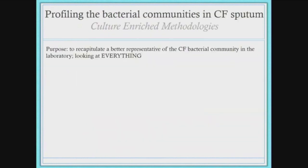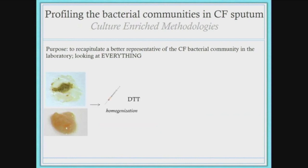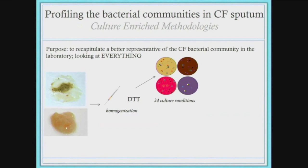In our lab — the Surratt lab — we employ a technique called culture-enriched methodologies in order to survey not just what we expect to find, but to really recapitulate a more holistic microbiome. Samples from individuals with cystic fibrosis are very heterogeneous — lots of saliva and mucus — so first we homogenize through physical homogenization with a syringe or use a mucolytic like DTT to break apart the disulfide bonds within the mucus. Instead of using select media types, we use a vast majority of culture plates to look for everything that's there.